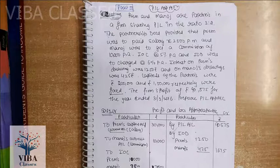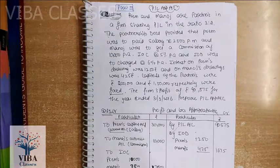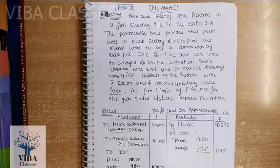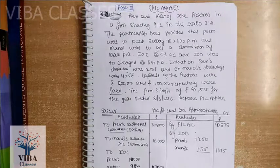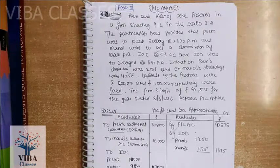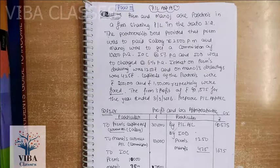In the last video, we have been discussing how to make P&L Appropriation and Partners Capital Account. Today we are going to discuss how to make P&L Appropriation Account, that means Profit and Loss Appropriation Account. We are going to do two questions related to that concept.